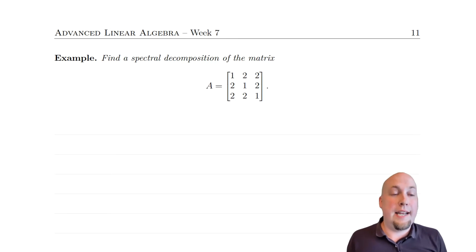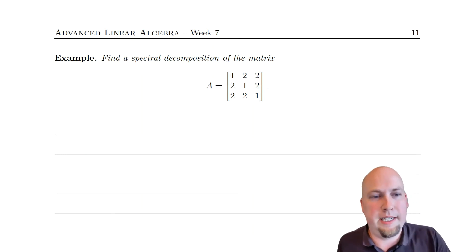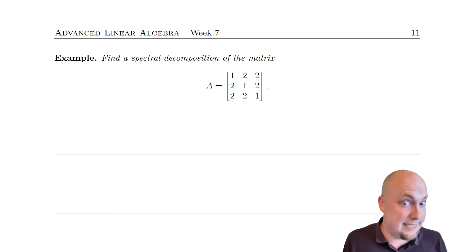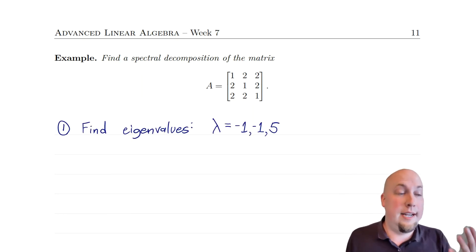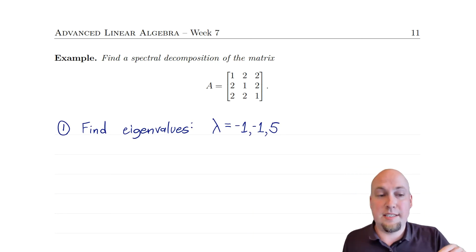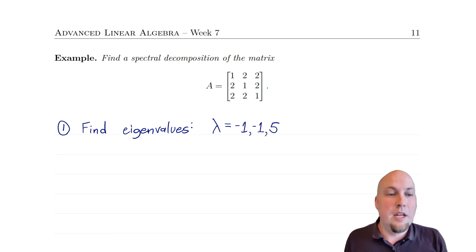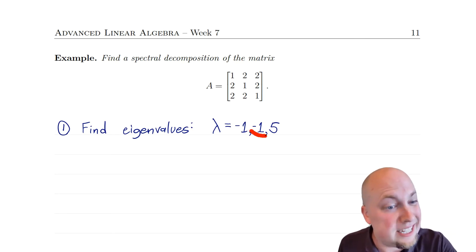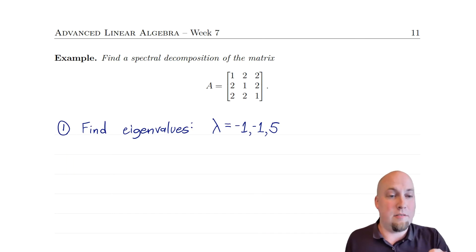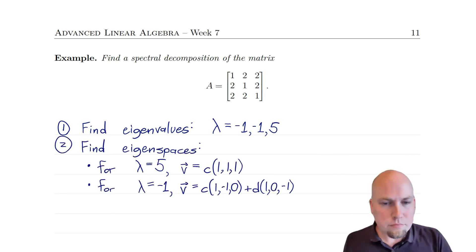Let's ramp up and look at how to compute a spectral decomposition for a 3-by-3 matrix. All the basic ideas are the same, but some details get nastier. Spectral decomposition is a diagonalization, so we start by computing eigenvalues and eigenvectors. Skipping the linear algebra 1 calculation: it turns out one eigenvalue is repeated with algebraic multiplicity 2 — we get eigenvalue −1 twice — and we also have an eigenvalue of 5.